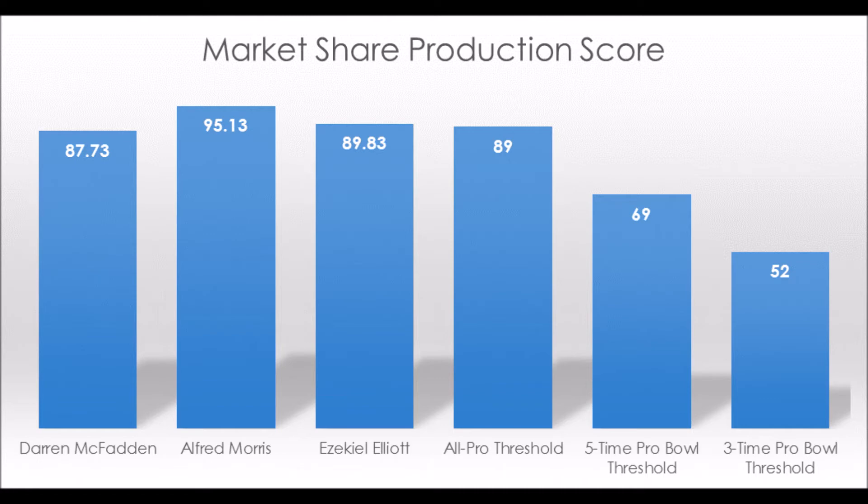You want backs that are productive at the college level. You want backs that are bell cow backs. The great thing about the Cowboys group is they're all bell cow backs — guys in college who carried the load for their team at a very high level, which is really important at this particular position. From a production standpoint, they all have the marks you're looking for in terms of all-pro potential, with McFadden being the only one who only reached pro bowl potential.